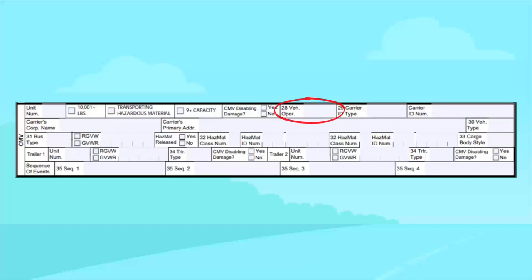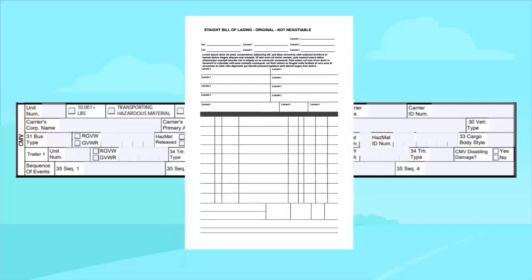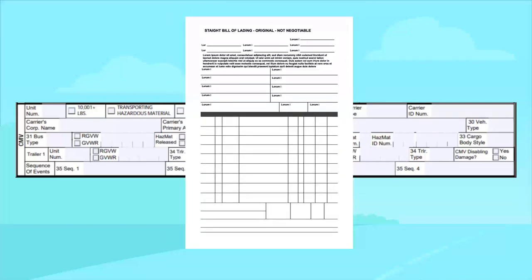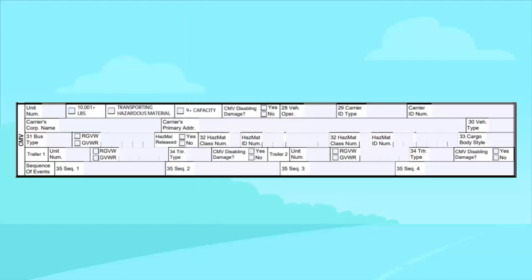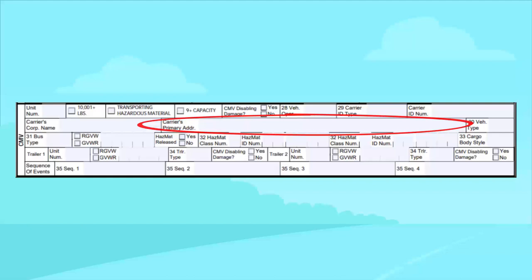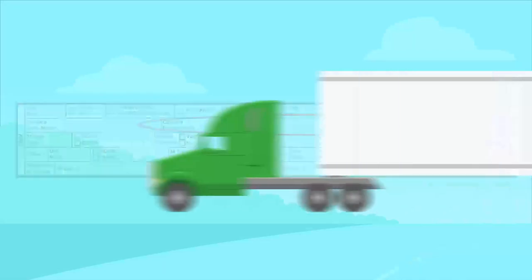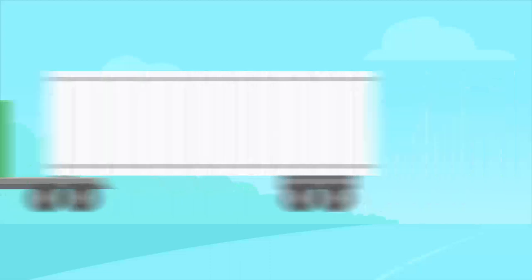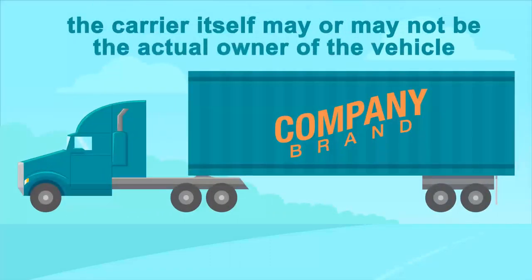The vehicle operation field identifying the type of commerce can be determined through the bill of lading and destination information. Other elements of the carrier fields, such as the carrier's corporate name and carrier's primary address, depend on the entity responsible for the operation of the vehicle. Because the vehicle can be a hired carrier or a private carrier, the carrier itself may or may not be the actual owner of the vehicle as shown on the registration receipt.